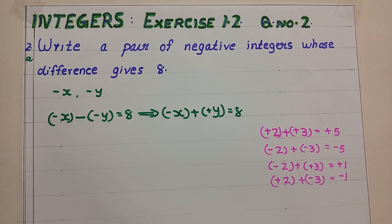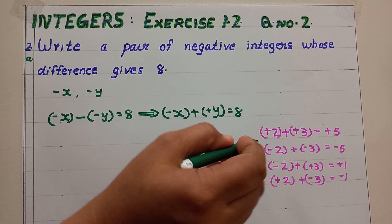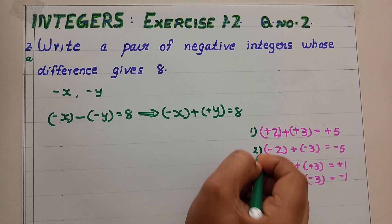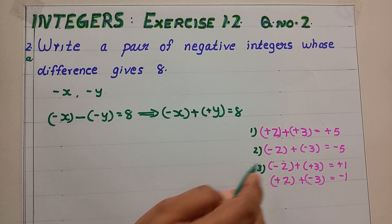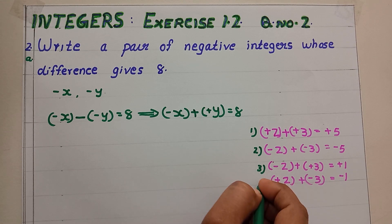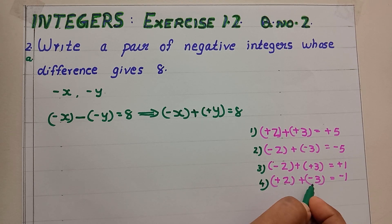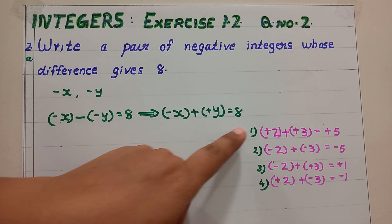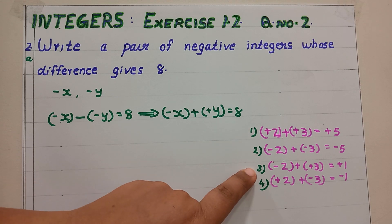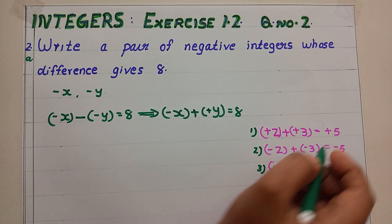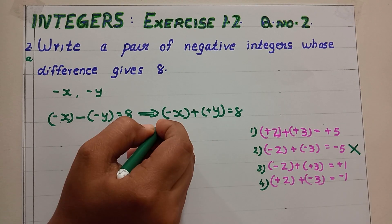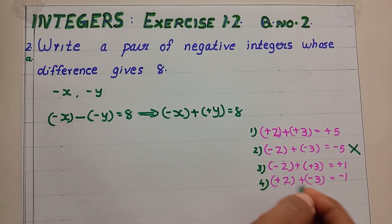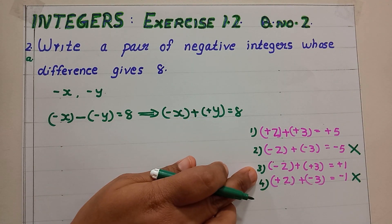These are the different cases for addition of integers. Case 1: both numbers are positive. Case 2: both numbers are negative. Case 3: one number is negative and the other is positive. Case 4: one number is positive and the other is negative. Our aim is to get an answer of positive 8, so the numbers may lie in case 1 or case 3. The numbers minus x and plus y won't be in case 2 or case 4.